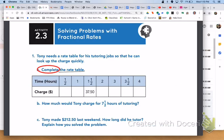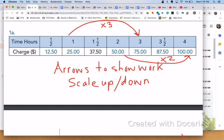Please turn to page 65, activity 2.3, solving problems with fractional rates. Tony needs a rate table for his tutoring jobs so that he can look up the charge quickly. Please answer letters A, B, and C with your group. For number 1, letter A, here is what your rate table should look like. Please make sure that you are showing your work and you are using arrows to show your work, whether you are scaling up or scaling down to come up with equivalent rates for your table.